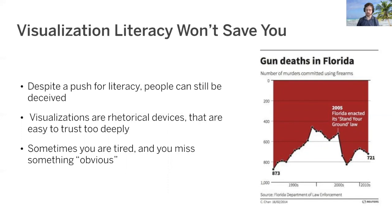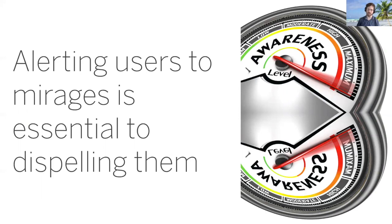There are lots of additional ways that you might be deceived. For instance, visualizations are rhetorical devices that are easy to trust too deeply, which can cause the reader to miss subtleties or to accept questionable conclusions unquestioningly. And sometimes there are just times when you're tired and you miss something obvious. So instead of relying on the user to do everything for themselves, we can turn to computers for help. Alerting users to mirages is a great way to guide them towards safer visual analytics. Some mirages, like the reversed axes we saw on the previous slide, are easy to detect — simply query the function creating the visualization directly.